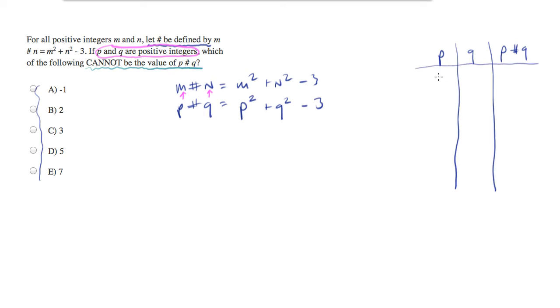I'm going to try the smallest numbers I can use, one and one for p and q. And let's go ahead and plug those in. If I plug in one squared plus one squared minus three, that's going to be equal to negative one. And we just found out that A is not the answer.